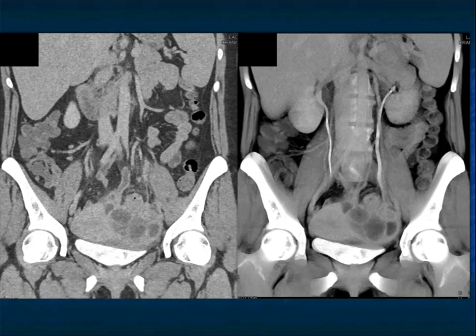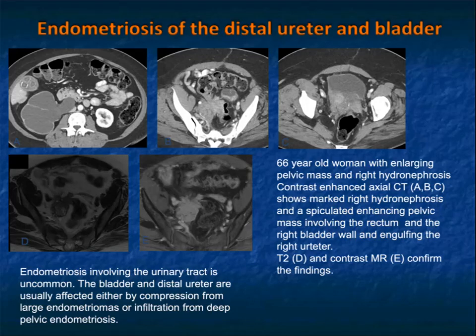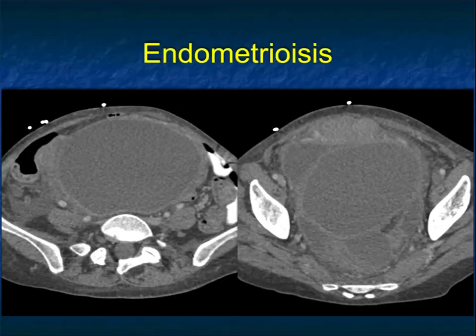Endometriosis can involve the urinary tract. In this case, it involves the ureter on the left with no obstruction. In another case, endometriosis on the distal right ureter is causing obstruction — you can see hydronephrosis on the right with marked thinning of the cortex. You might think of a longstanding stone, bladder cancer, or some pathology of the right kidney, but endometriosis was the right answer.